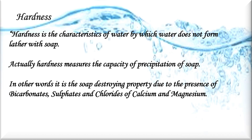Next is hardness. Hardness is the characteristic of water by which water does not form lather with soap. Hardness measures the capacity for precipitation of soap — in other words, it is the soap-destroying property — due to the presence of bicarbonates, sulfates, and chlorides of calcium and magnesium.